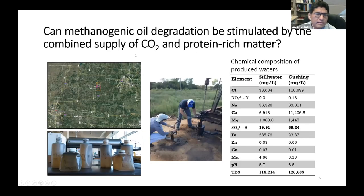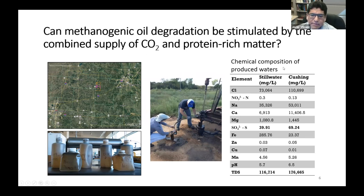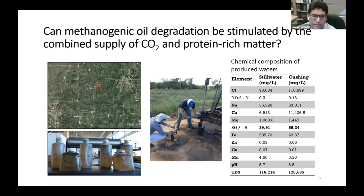To test the possibility of degrading oil by stimulating the activity of methanogenic microbial communities, we collected water from the Stillwater and Cushing oil fields in Oklahoma. This map shows the exact location from where we collected these produced waters, and this is the chemical analysis of the collected water. The salt content is high — 116 and 176 grams per liter — and the sulfate content is relatively low, which means that sulfur-reducing bacteria activity is not that high. Therefore, methanogens can work actively in these produced waters.